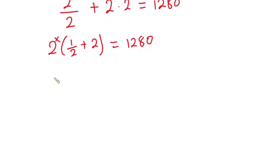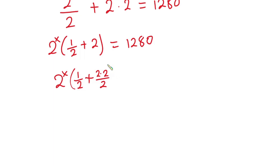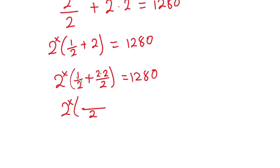Now let's simplify what's in the bracket. To add the fractions, they need a common denominator. So I'll rewrite 2 as 4 over 2, giving us 1 over 2 plus 4 over 2. Since the denominators are the same, we sum the numerators: 1 plus 4 equals 5. So we have 2 to the power x times 5 over 2, equal to 1280.